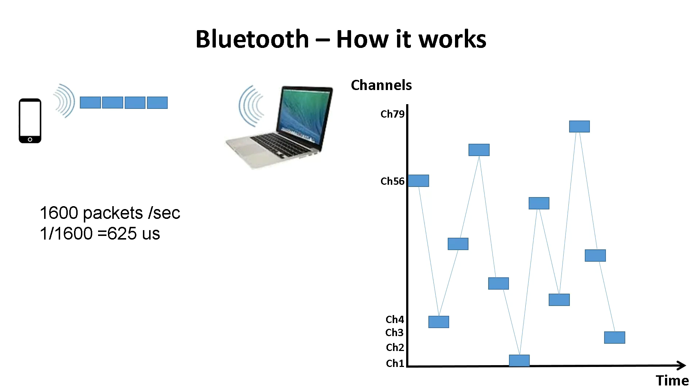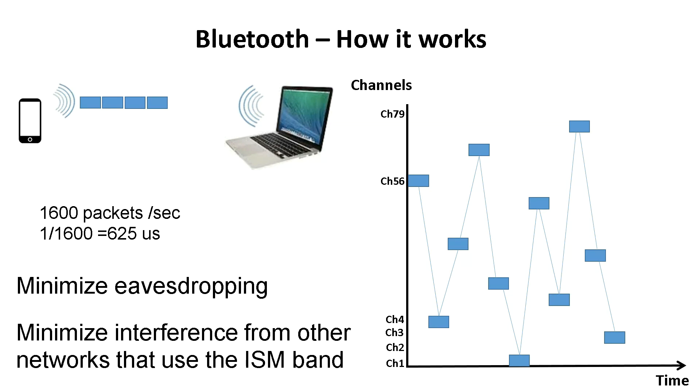So what is the benefit of this? Well, the benefits of frequency hopping are to minimize eavesdropping. It would be very difficult for a hacker to get into the network where frequencies are being changed every 625 microseconds. And also it minimizes interference from other networks that use the ISM band. It's not just Bluetooth that uses the ISM band, but also Wi-Fi and cordless phones use the ISM band.